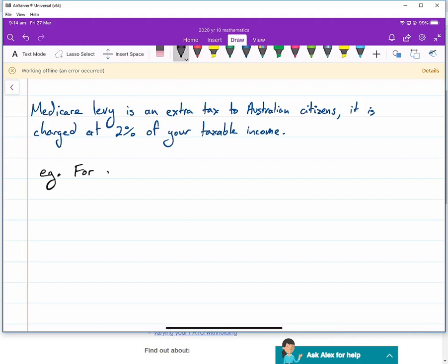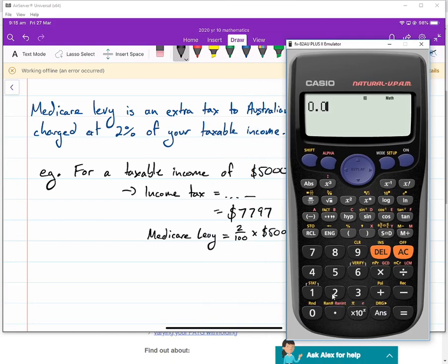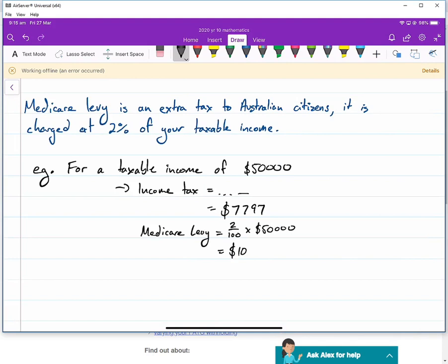For a taxable income of $50,000, income tax was equal to $7,797. Then we have our Medicare Levy, which is 2% of the $50,000. So we just write 2% times $50,000. And then we get our calculator. I just type in 2%, you could do two over a hundred if you want, times $50,000. And that's $1,000.